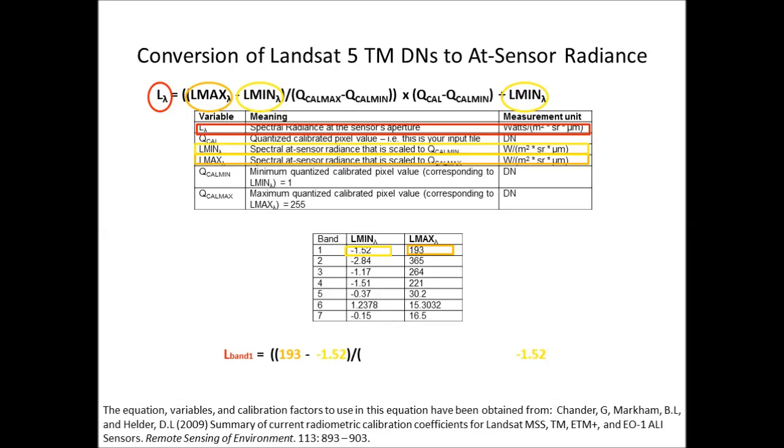We're then going to divide by the QCalMax, which is given down the bottom of the first table as 255, and we subtract the QCalMin, which is 1. These values stay the same regardless of which band we're correcting.